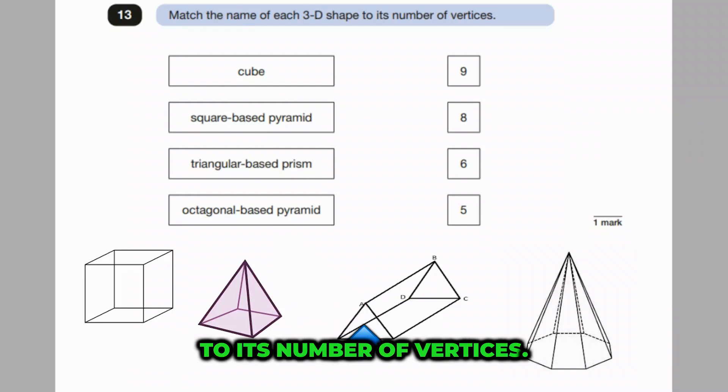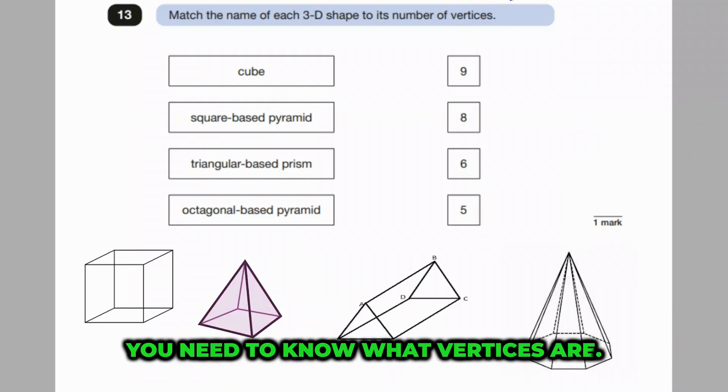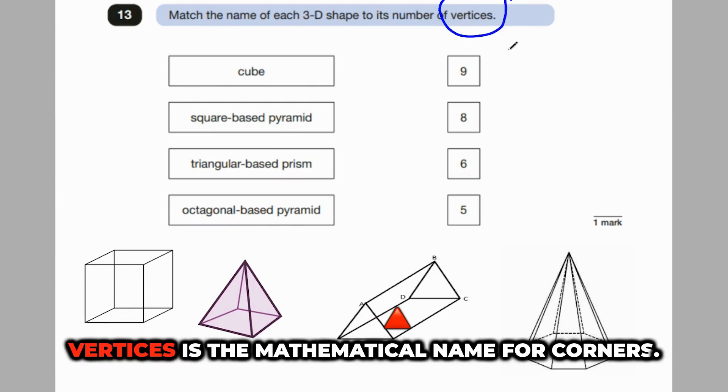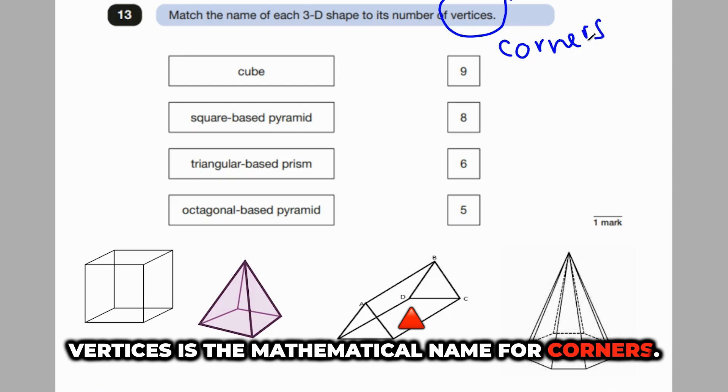Okay, match the name of each 3D shape to its number of vertices. Well, first of all, you need to know what vertices are. Vertices is the mathematical name for corners.